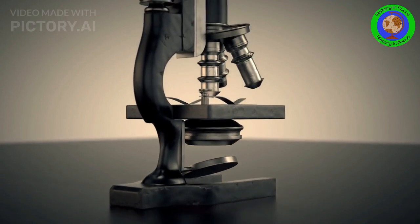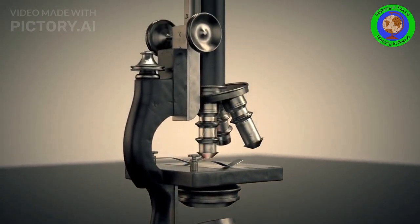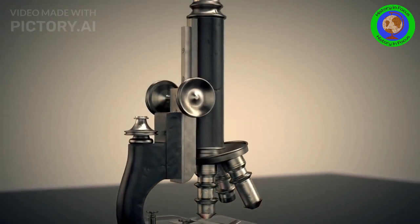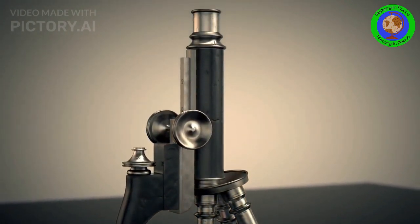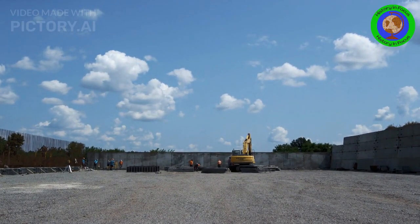Technological progress. The development and improvement of scientific instruments, such as the telescope and microscope, enabled scientists to make more accurate observations and gather new data. This laid the groundwork for further technological advancements in the following centuries.